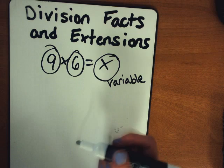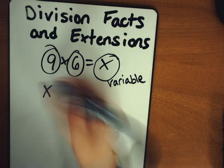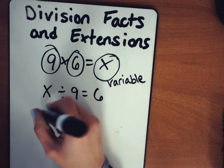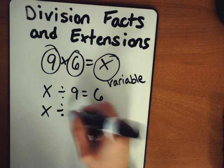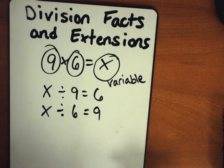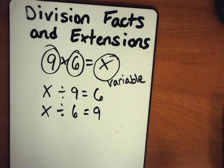You can flip it around and think what divided by 9 equals 6 or divided by 6 is equal to 9. But we still consider that part of the fact family even though we know that it's going to stand for the number 54.